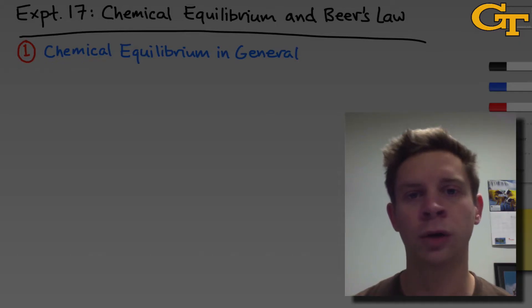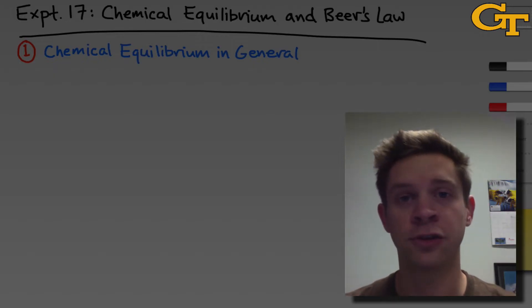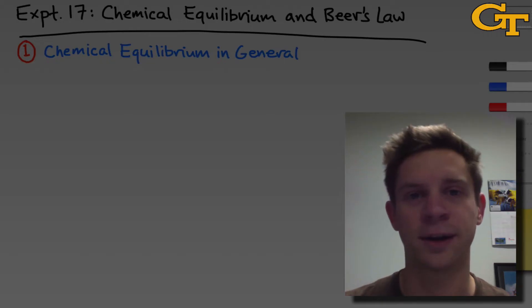In part two, we'll get closer to the actual experiment, and we'll talk about measuring the equilibrium constant K, Kc, or Keq. The purpose of this experiment is to measure the equilibrium constant of the reaction of iron-3-cation with thiocyanate anion.